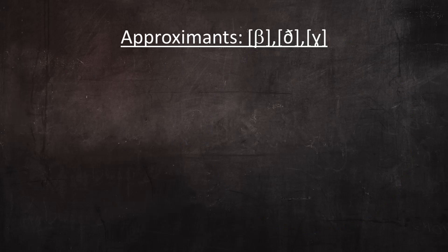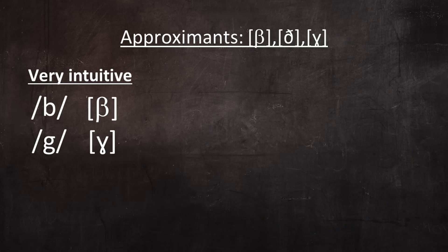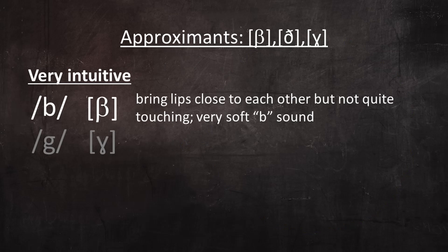The approximant version of B and G are very intuitive — pretty much exactly what you'd expect them to be. Approximant B is pronounced by bringing your lips very close to each other, as if you were about to pronounce an ordinary B sound, but instead of making them touch, you merely bring them very close to each other. So it's like a very soft B sound.